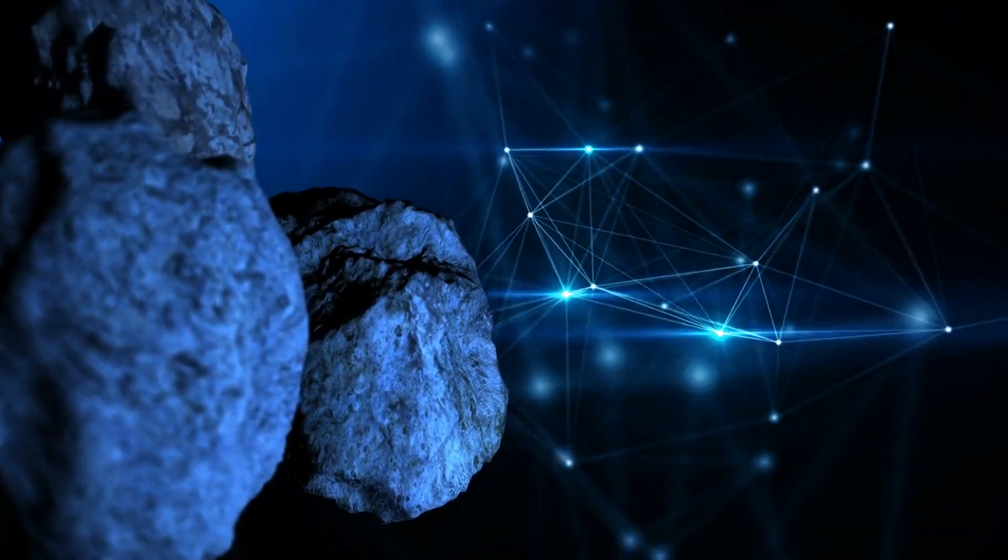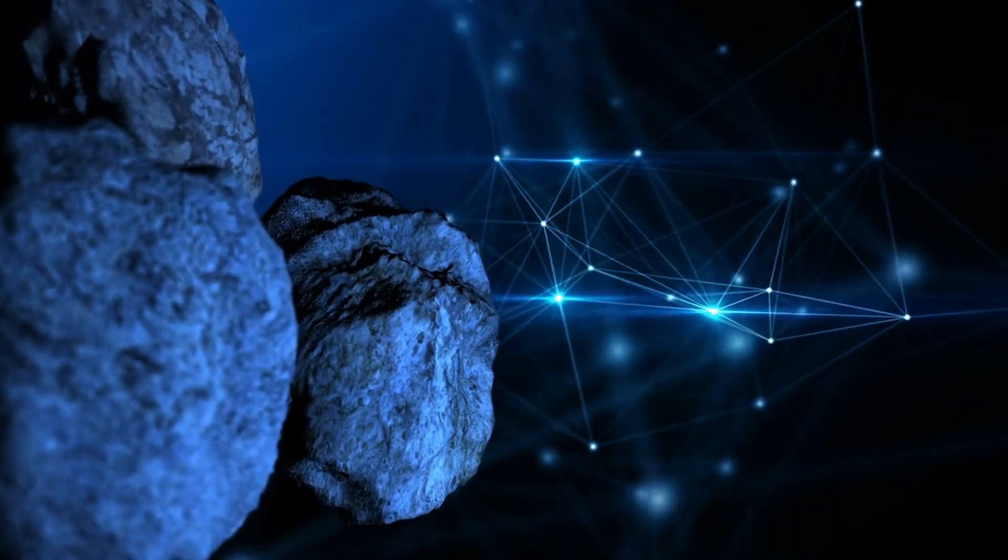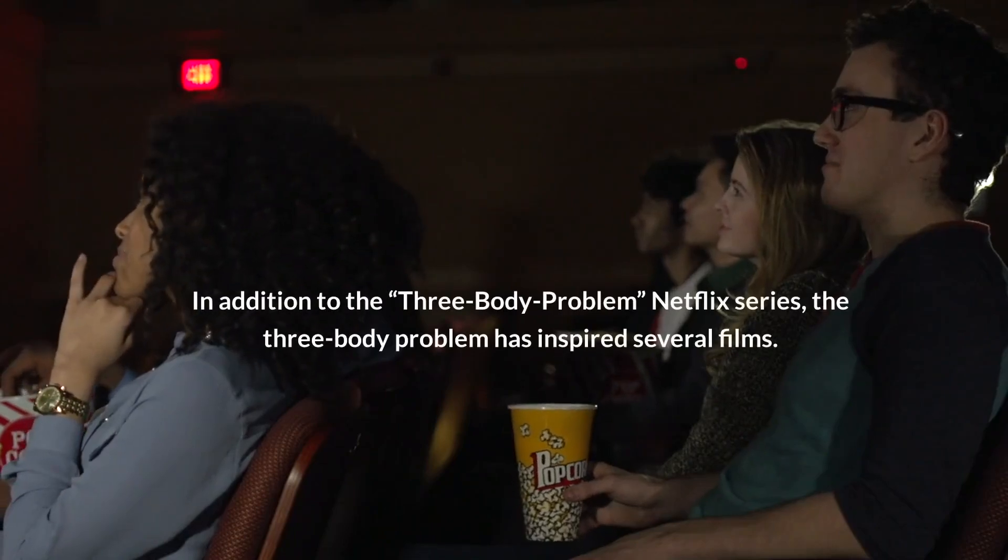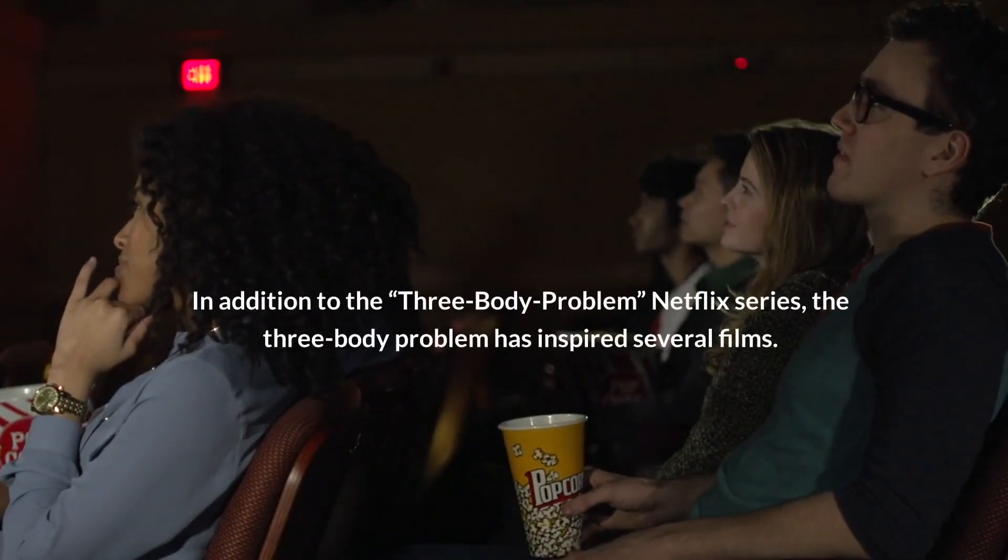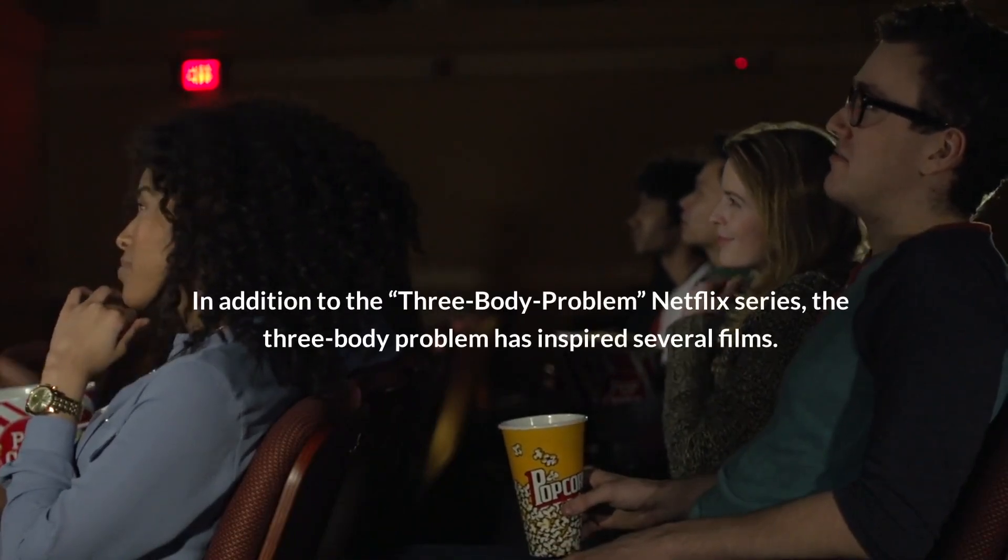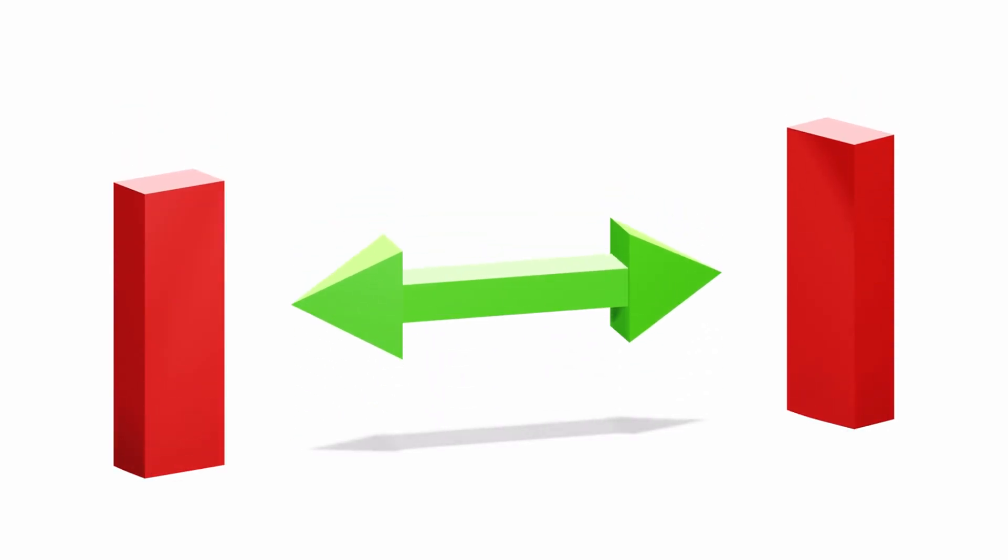In addition to the Three-Body Problem Netflix series, the three-body problem has inspired several films. While not directly named, the concept is often used as a metaphor for complex, unpredictable relationships. It's particularly fitting for stories that involve love triangles, where the dynamic between three individuals can be as unpredictable and chaotic as the motion of three celestial bodies.